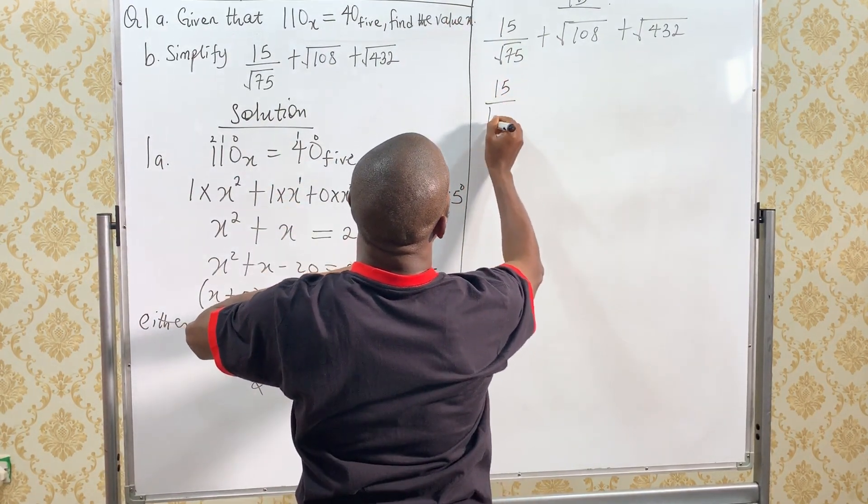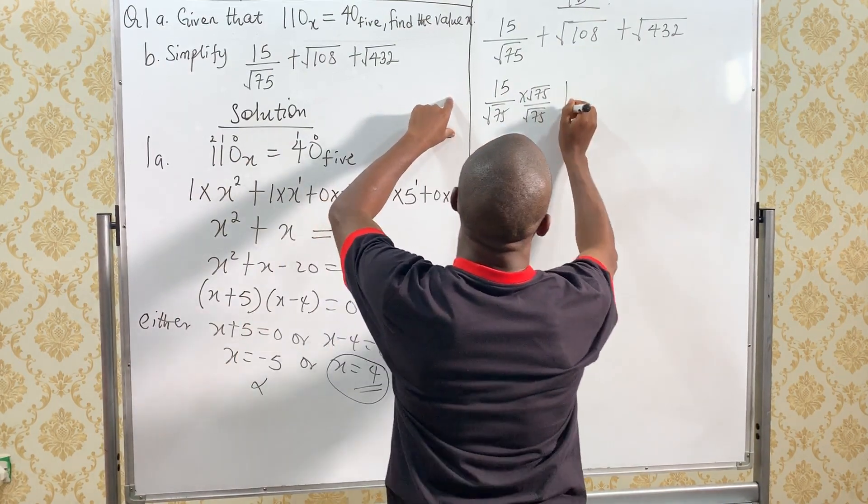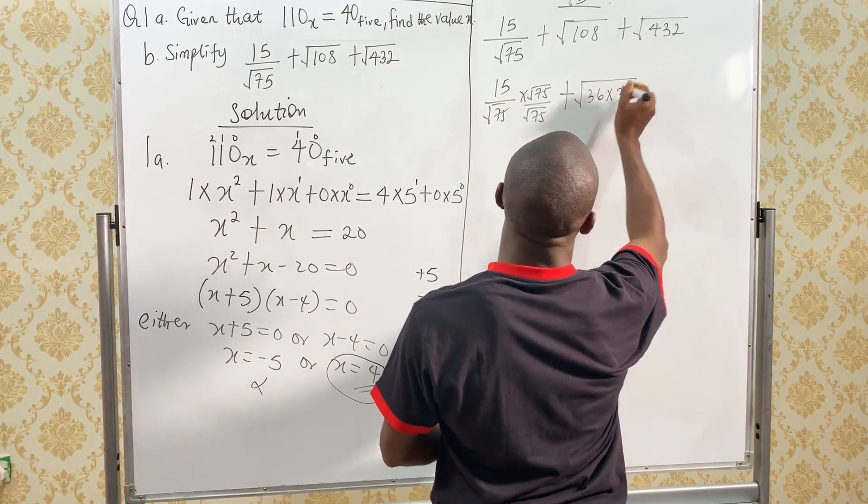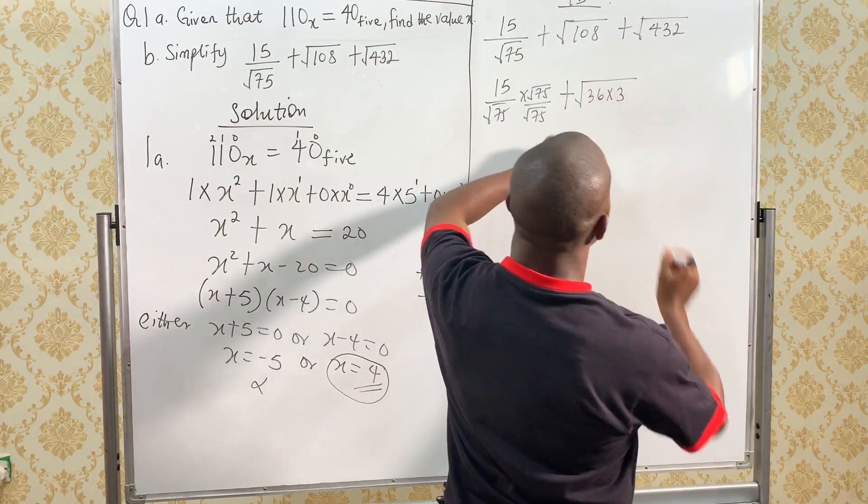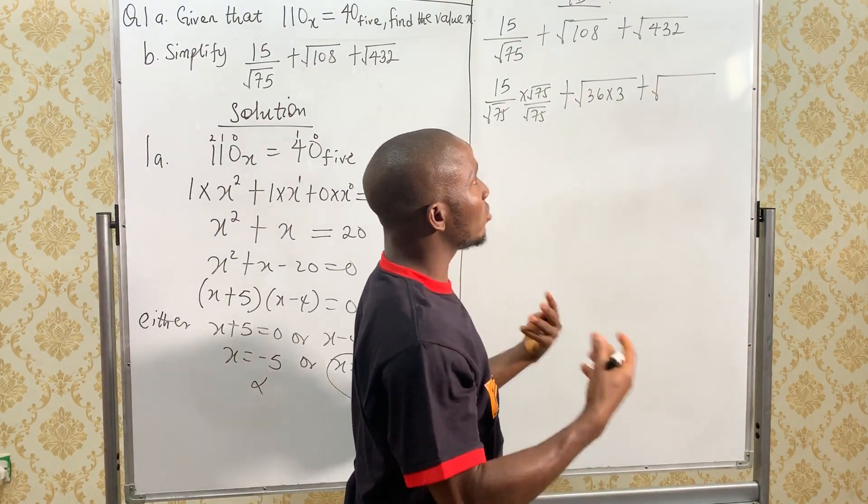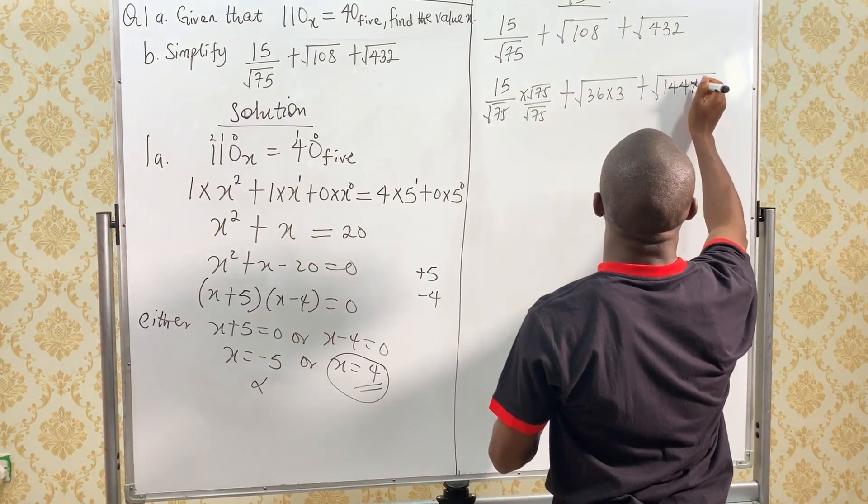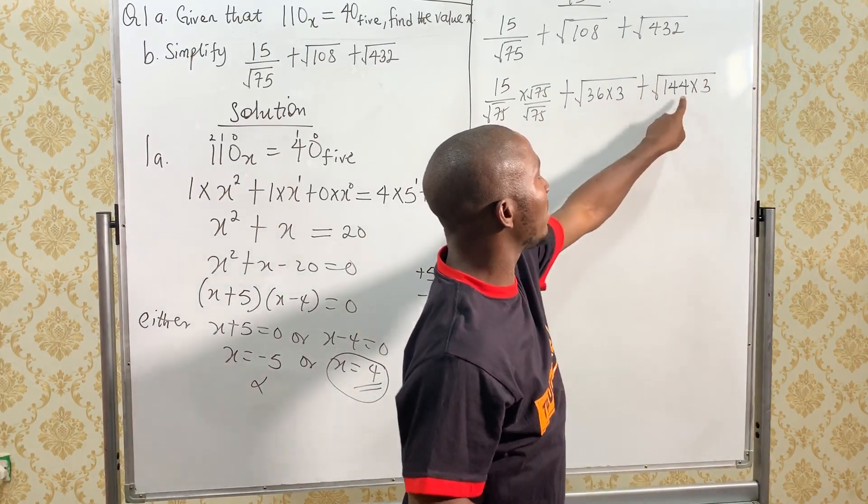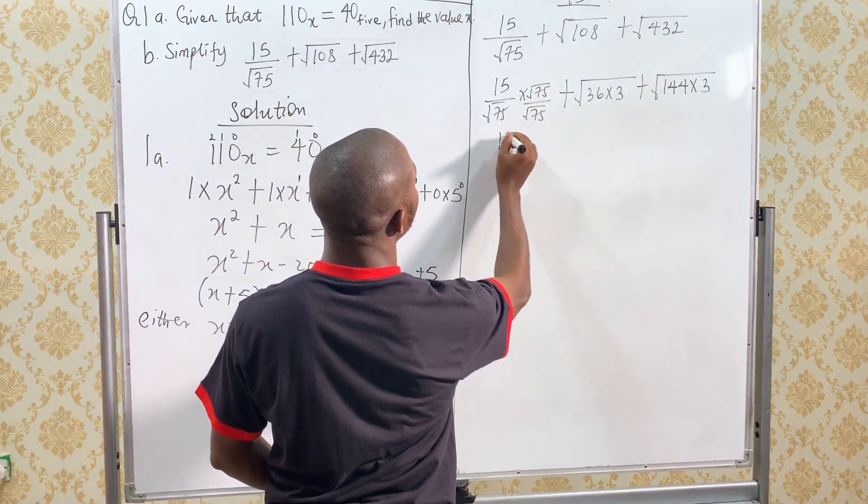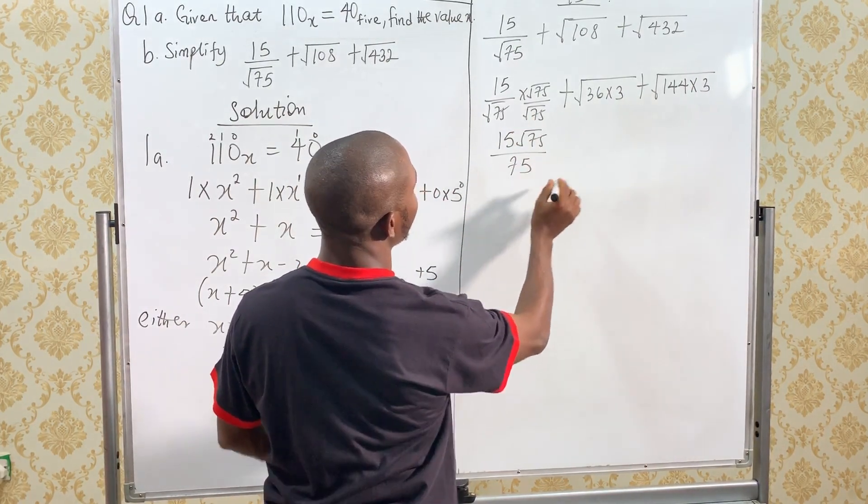it's going to become 15 over root 75 times root 75 over root 75 plus root 108 can be broken down into 36 times 3. 36 times 3 will give us 108. Plus, 432 can also be broken down. We tried to look for the highest perfect square numbers that can divide 432 and it will be 144. 144 times 3. 144 is the perfect square. Let's look at this rationalization here. 15 multiplied by root 75. That will be 15 root 75 divided by root 75 times root 75 will give us 75. Plus,